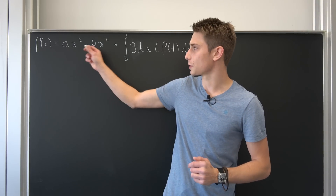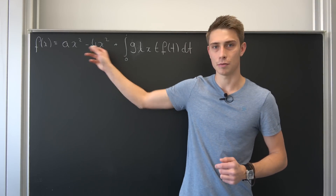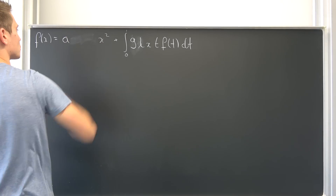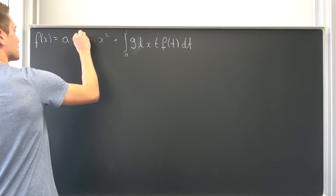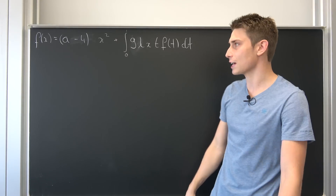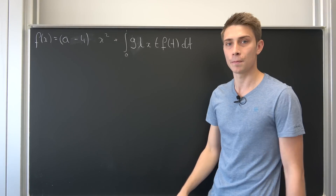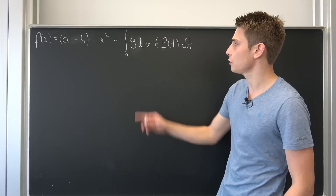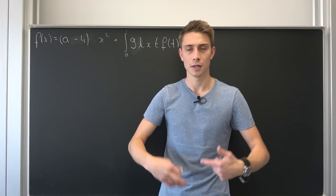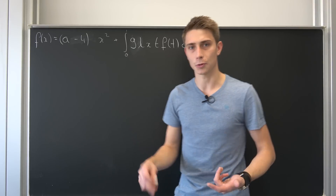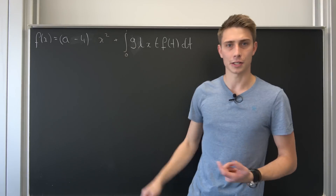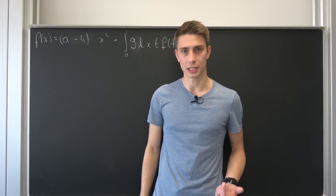First, I would like to factor this x squared right here. Let's bring this 4 to the inside into parentheses: a minus 4 times x squared. So far so good. And maybe you can see something if you bring this x to the outside, because this integral right here is going to be integrated with respect to t — this kind of looks like a quadratic equation.